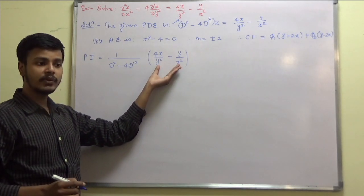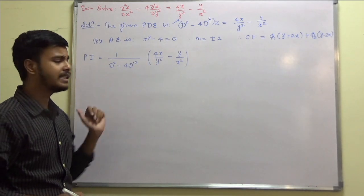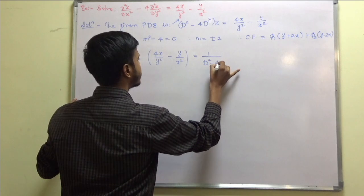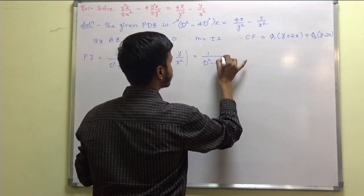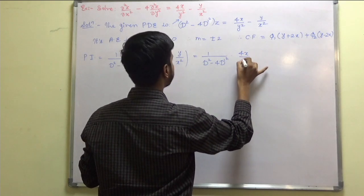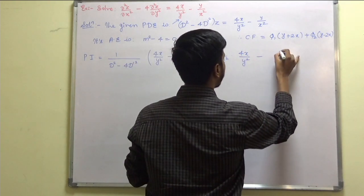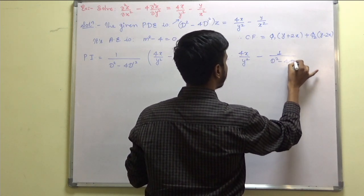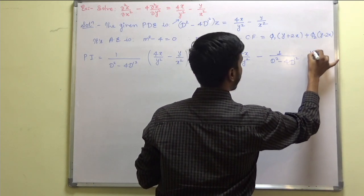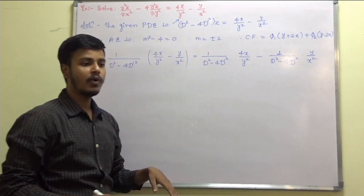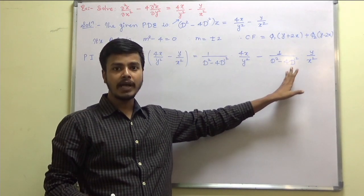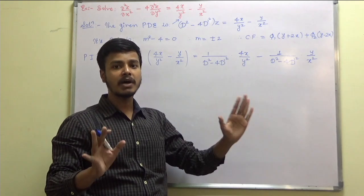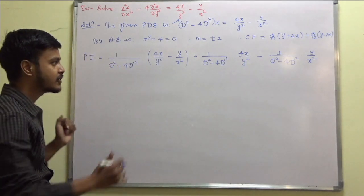As you can see there are 2 terms. What we are going to do is separate these terms and write it as: 1/(D² − 4D'²) into 4x/y² minus 1/(D² − 4D'²) into y/x². If you want, you can solve it one by one, taking PI₁ and PI₂ separately, or if you are smart enough you can solve it simultaneously.